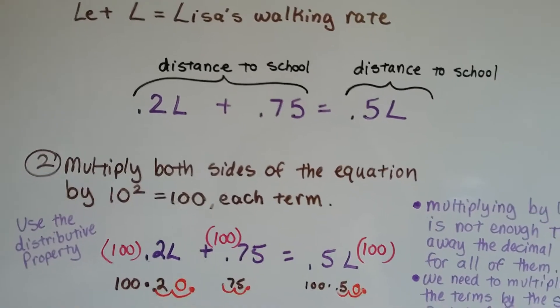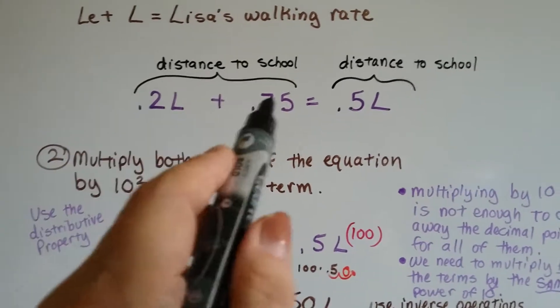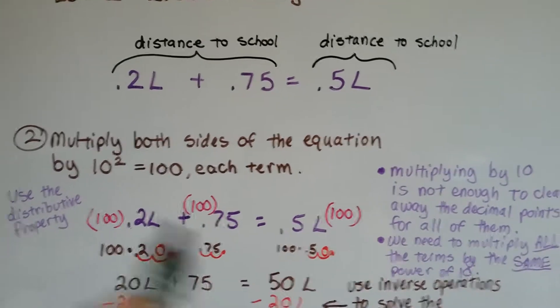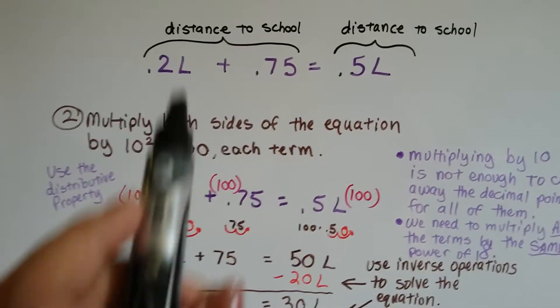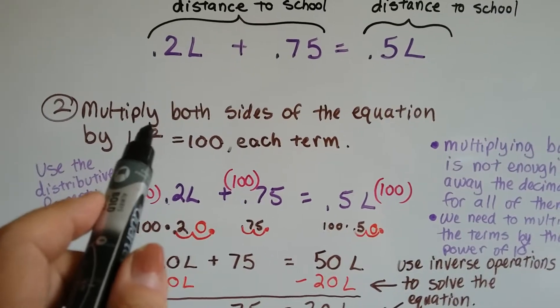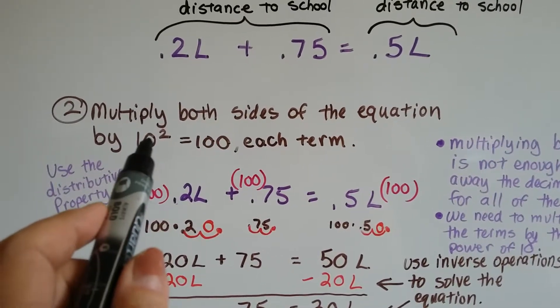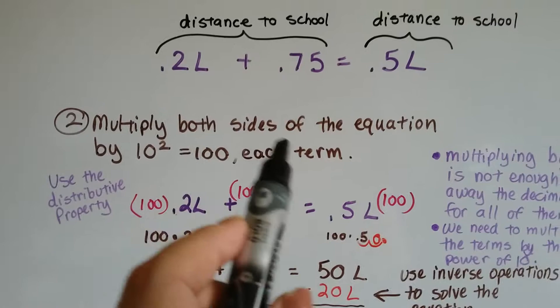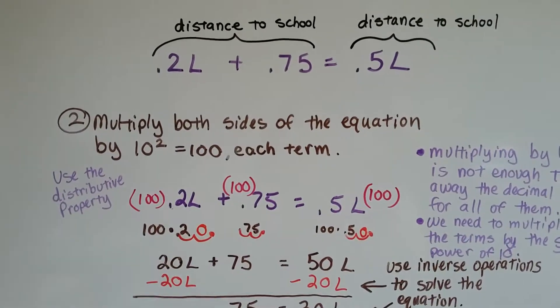So what we're going to do to get rid of these decimal points, the very first thing we need to do is we need to multiply both sides of this equation by 10 to the second power, which would be 10 times 10, right? That would be 100. We need to do it to each term.